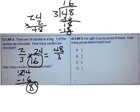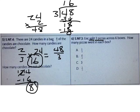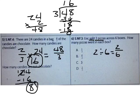Let's look at number 6. Eric split 2 pizzas across 6 boxes. How many pizzas went in each box? Two pizzas are being split up, so I could use 2 divided by 6. How could I write 2 divided by 6 as a fraction? I could write it as 2/6. I need to simplify. What's the largest number that goes into both 2 and 6? It's 2. When I simplify 2/6, the result is 1/3. The correct answer to this problem is A.